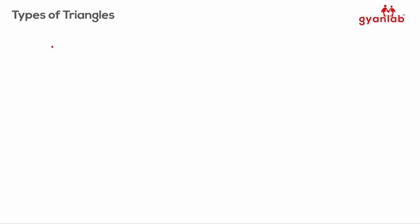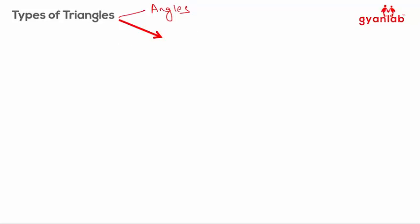To start off, you can basically classify triangles into two types: one would be based on their angles, and one based on the length of their sides.